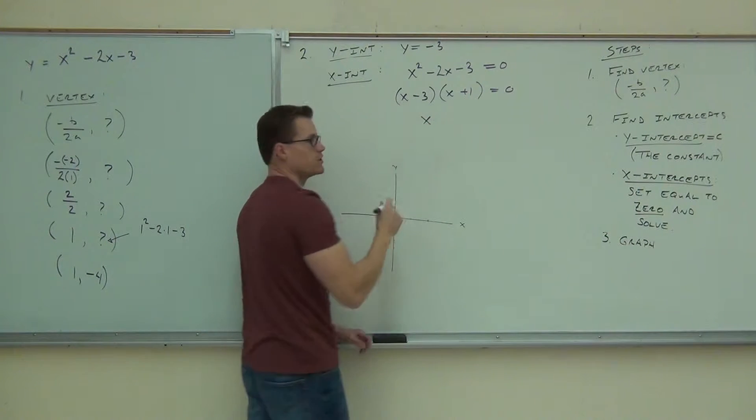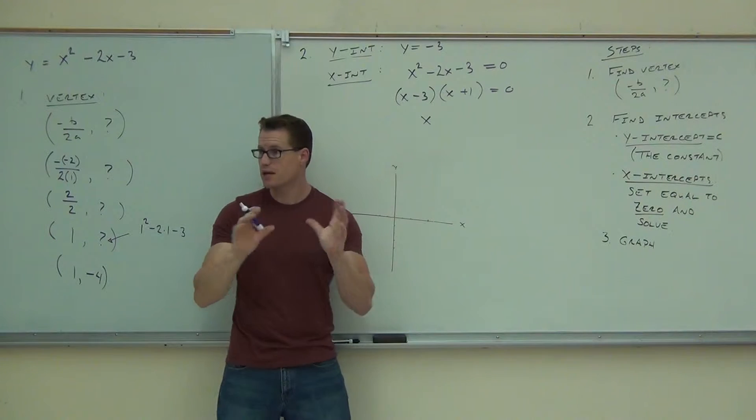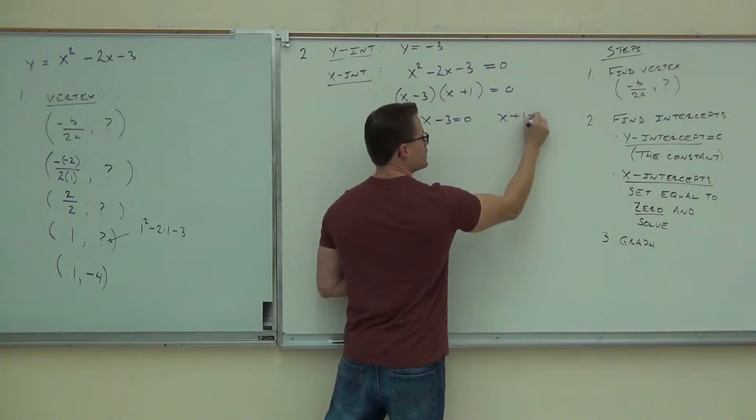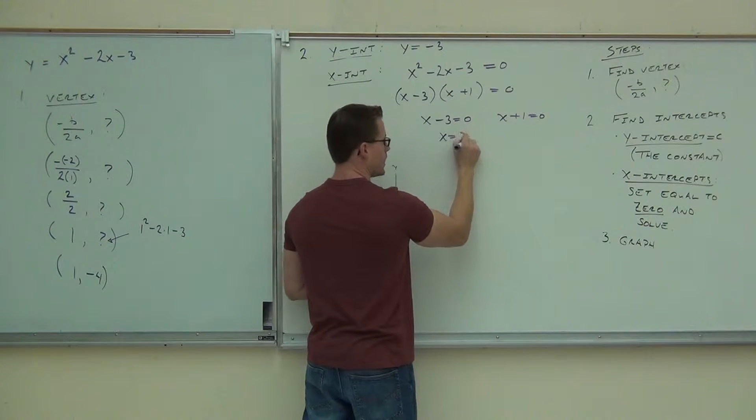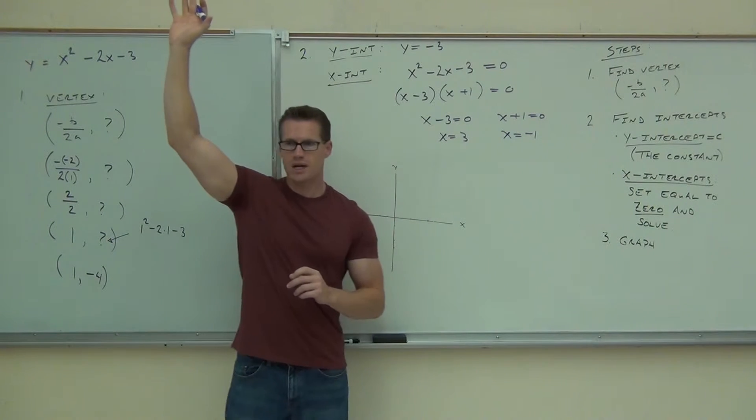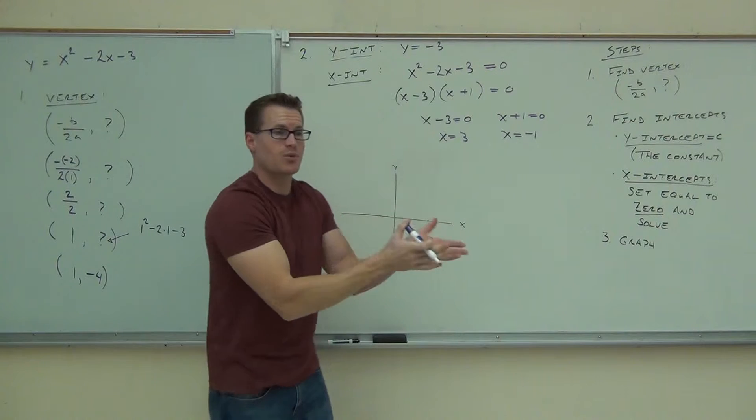Of course you take that a step further. You don't want to put negative 3 and plus 1 right here because those signs are going to change when you set them equal to zero. x minus 3 equals zero and x plus 1 equals zero. So x equals positive 3, x equals negative 1. Raise your hand if you found that. Great. Are you starting to see how important factoring is for you? We really need it every step of the way through this course.